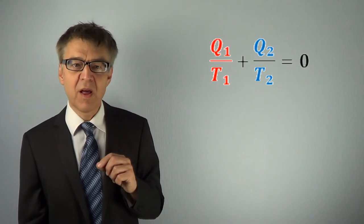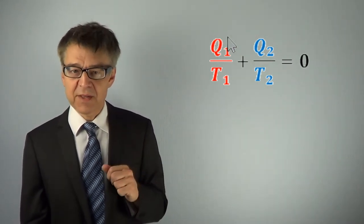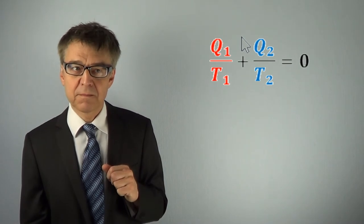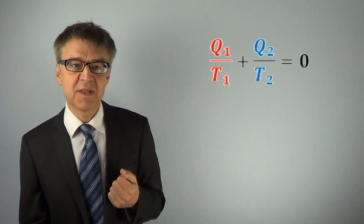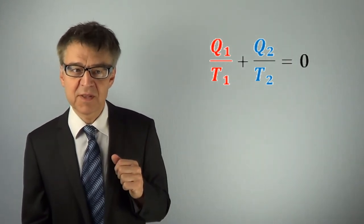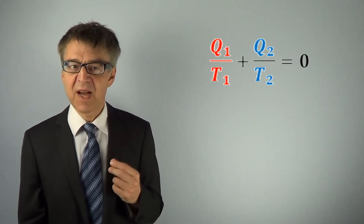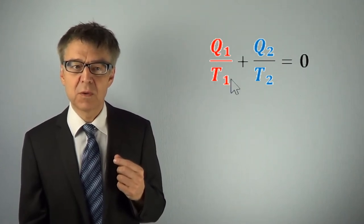According to the second law, the sum of the entropy changes must never be negative. It is greater than zero for irreversible processes. Only in the limiting case of reversible processes, such as here, at the idealized Carnot process, it is equal to zero. In the reversible Carnot process, the sum is exactly zero. This prompts the second law for the Carnot engine.